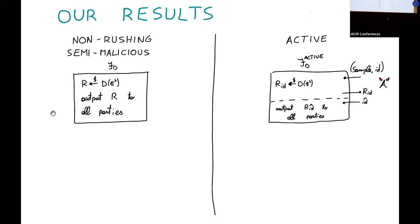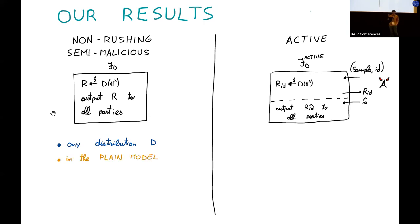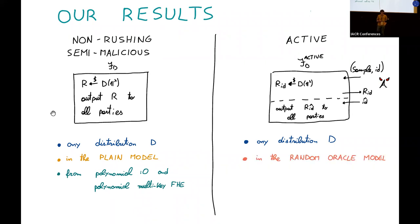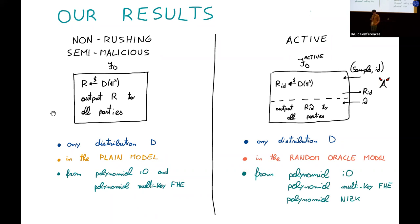So in the active secure case, the adversary receives a polynomial number of samples, chooses the one it likes the most, and forces the honest parties to output it. What are our results? In the semi-malicious case, we designed distributed samplers for any distribution D in the plain model using only polynomially secure primitives — in particular IO and multi-key FHE. In the active secure case, we designed again distributed samplers for any distribution D, but we had to rely on a random oracle. Again, we used only polynomially secure primitives: IO, multi-key FHE, and NIZK.